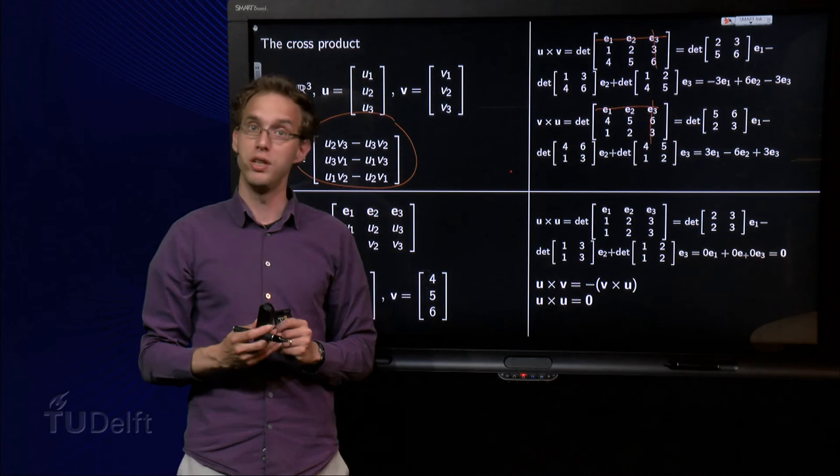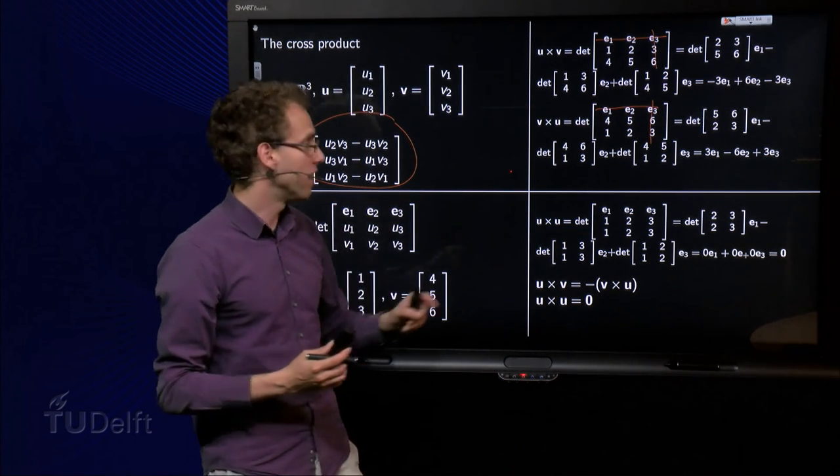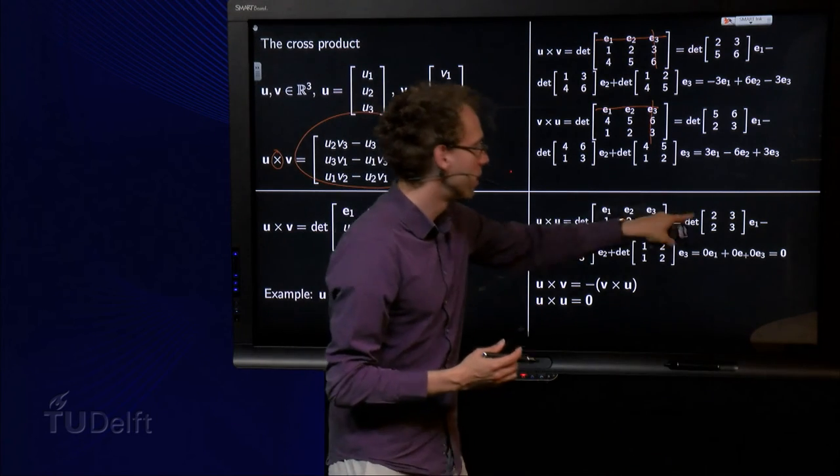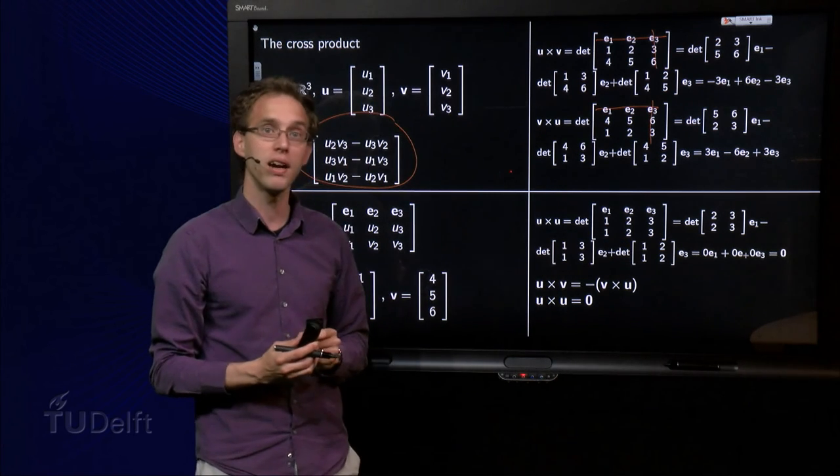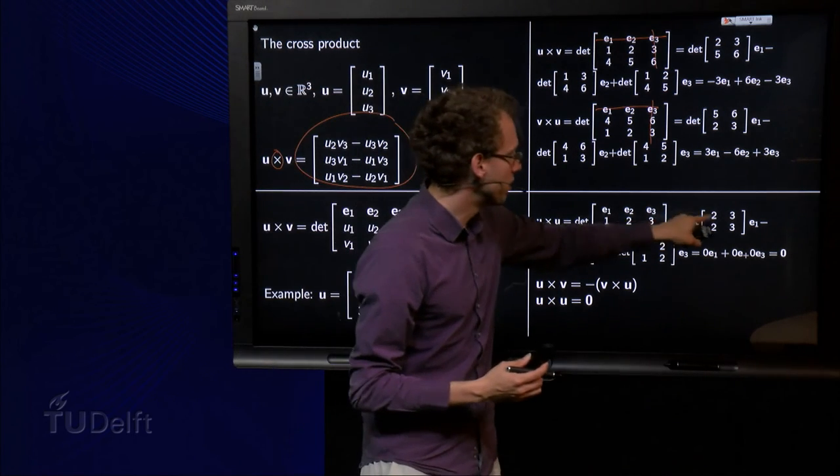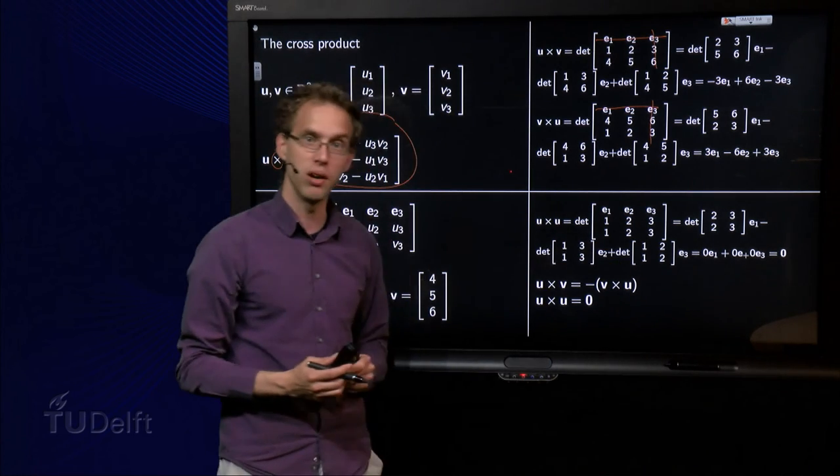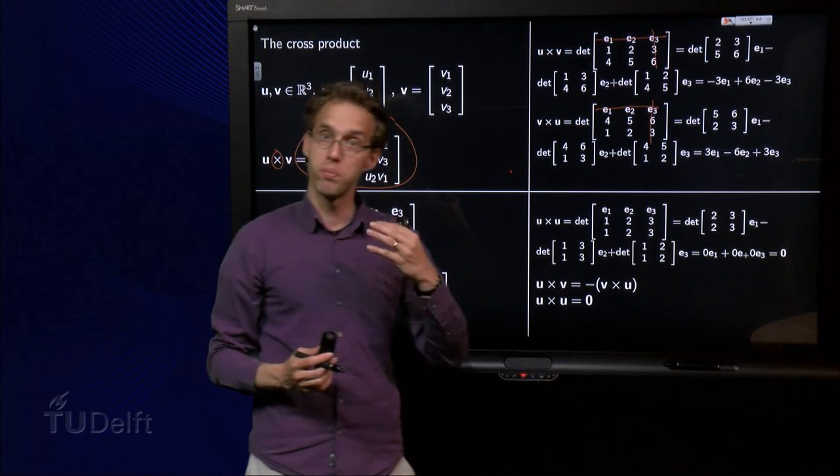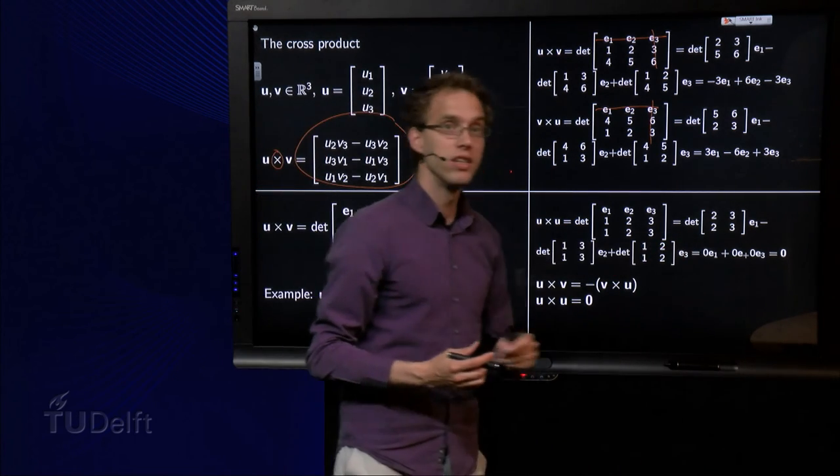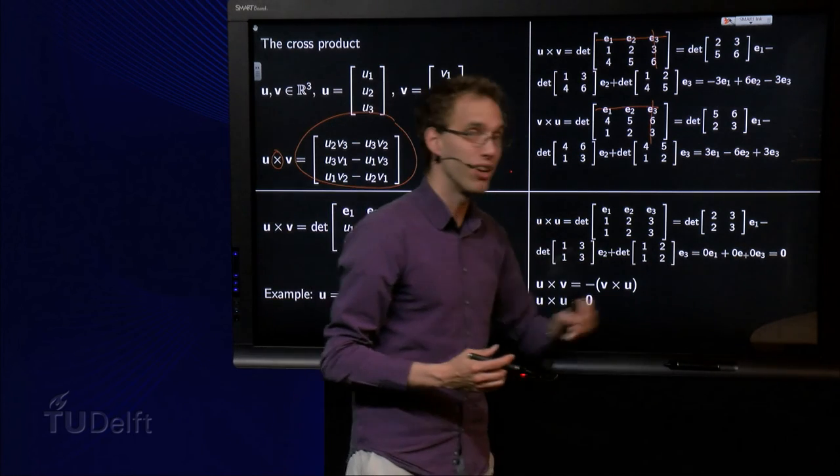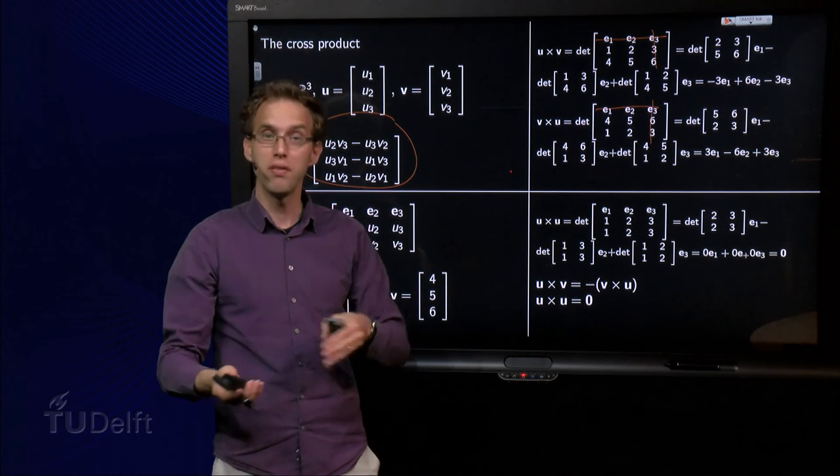Finally, what does u cross u yield? You make the matrix again, the determinant: e1 times this one minus e2 times that determinant plus e3 times this determinant. If you compute this, we get 6 minus 6 equals 0, 3 minus 3 equals 0, and 2 minus 2 equals 0. So 0 times e1 plus 0 times e2 plus 0 times e3 equals the zero vector. Not the zero number, but the zero vector. If you take the cross product of u with itself, you get the zero vector.